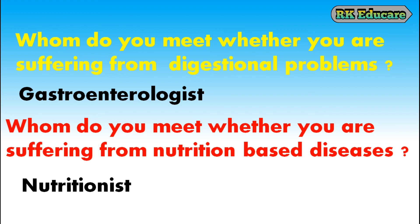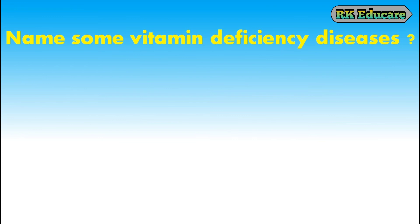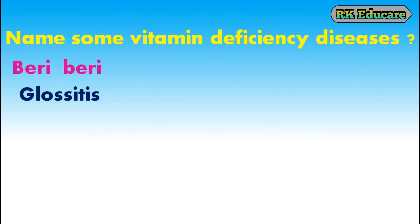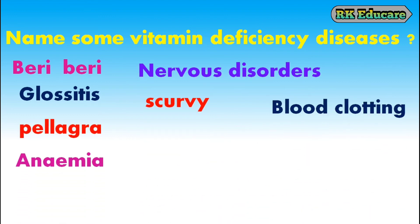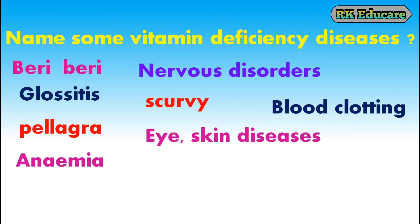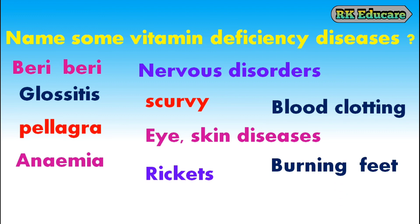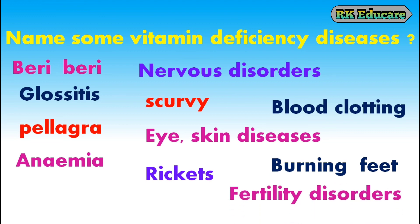Nutritional-based diseases — name some vitamin deficiency diseases. Beriberi, Glossitis, Pellagra, Anemia, Nervous Disorders, Scurvy, Blood Clotting disorders, Eye and Skin Diseases, Rickets, Burning Feet and Fertility Disorders are some of the vitamin deficiency diseases.